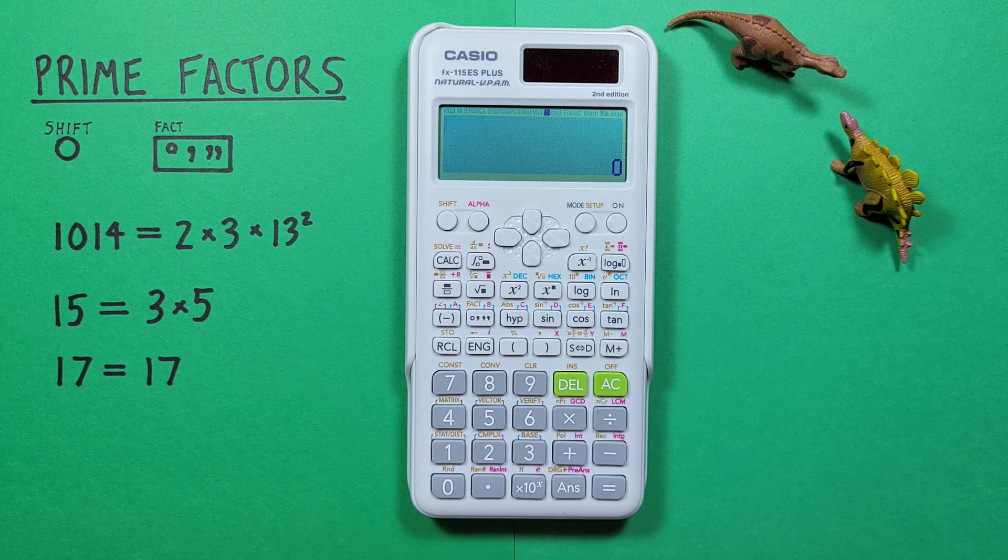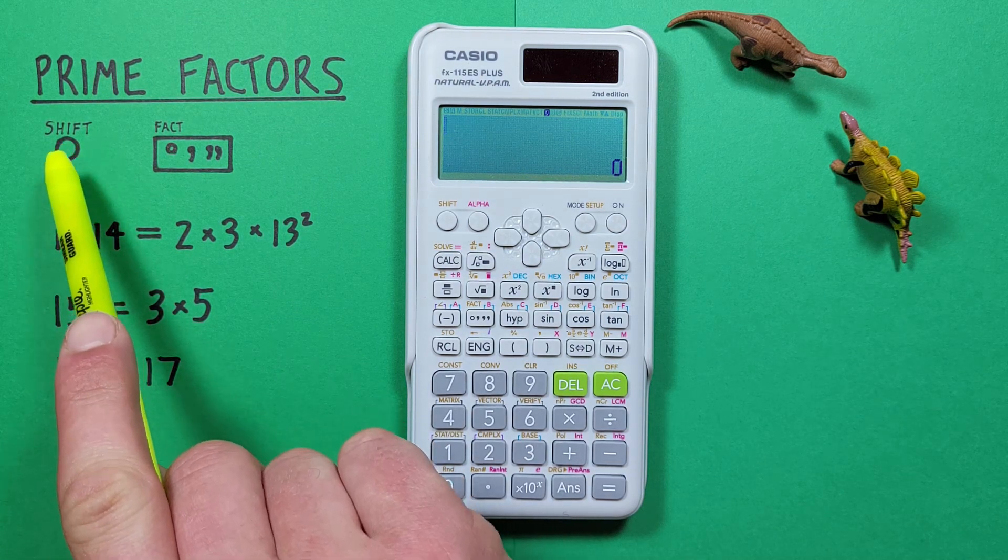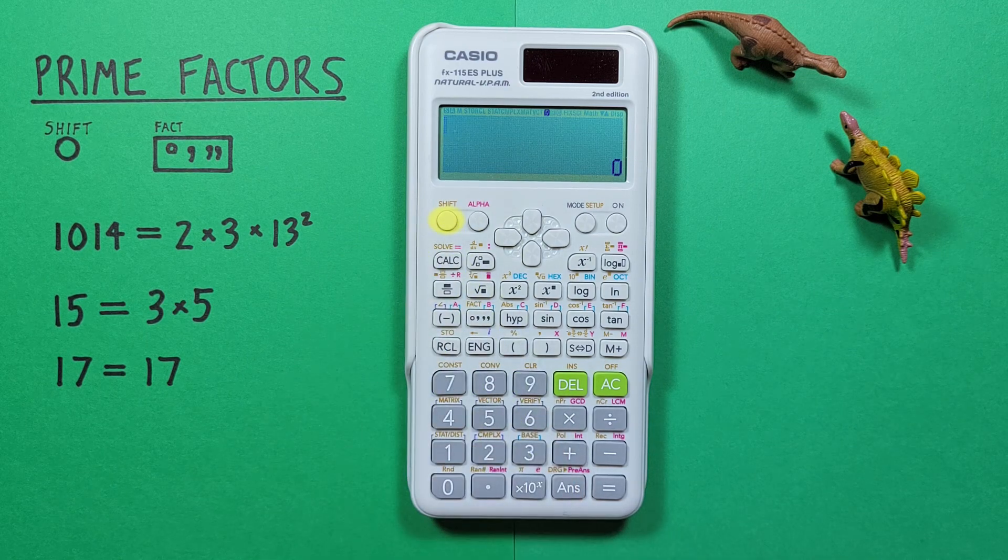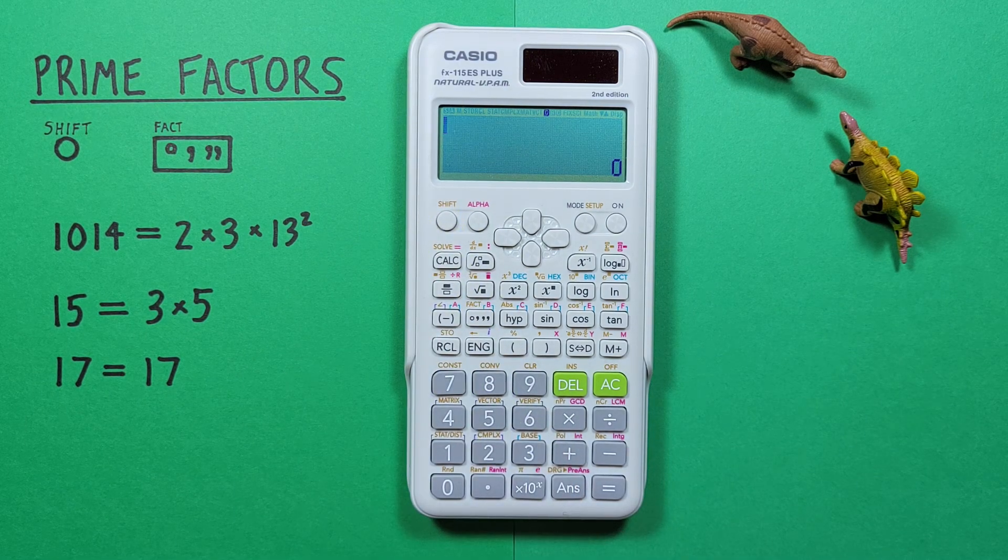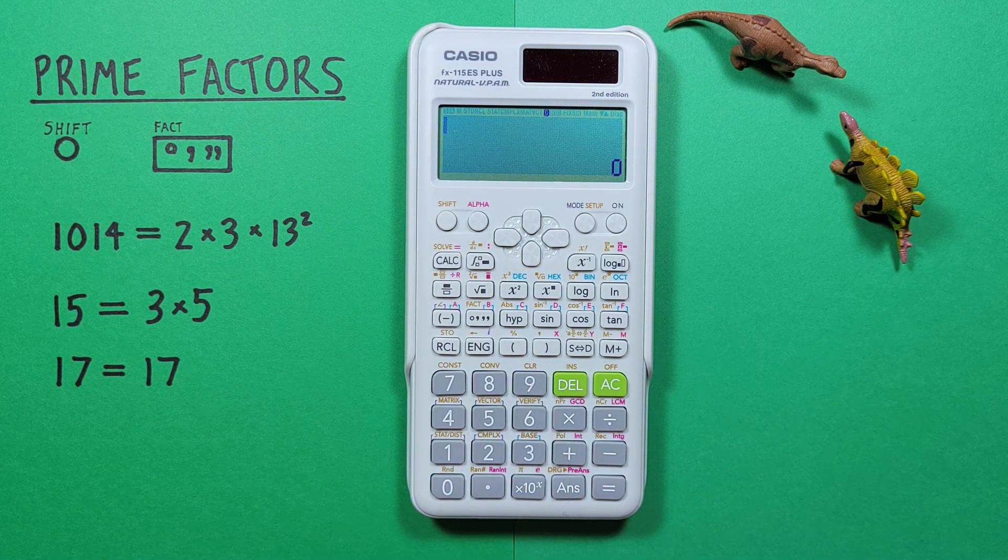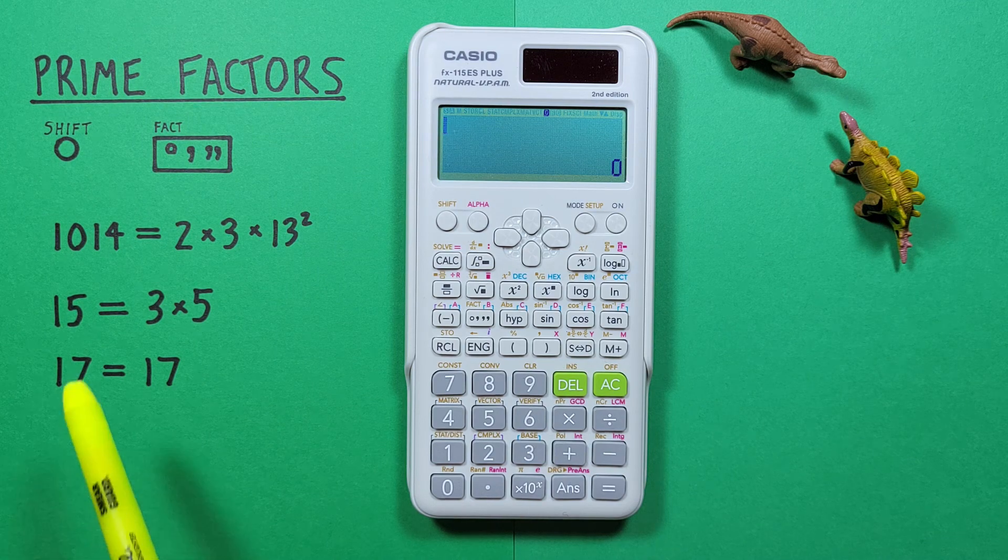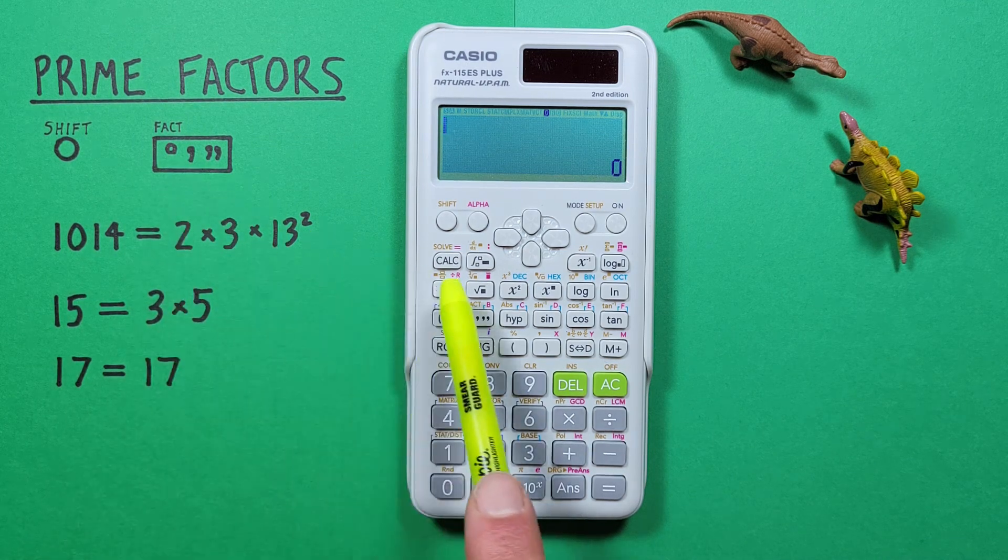To do that, we'll use the shift button that looks like this, located here, and the degree minute second button with the shift function of factor that looks like this, located here.